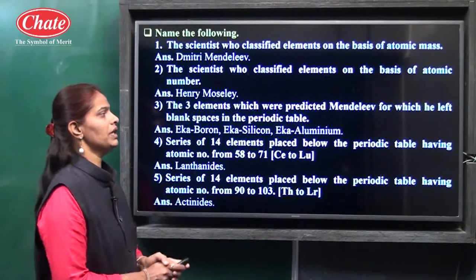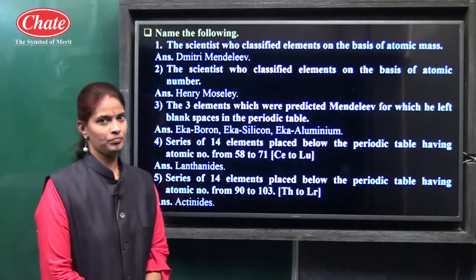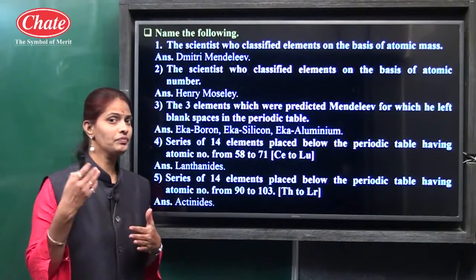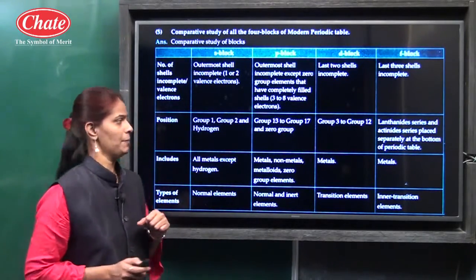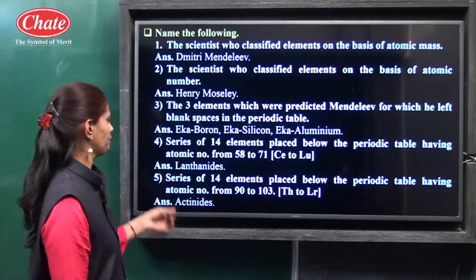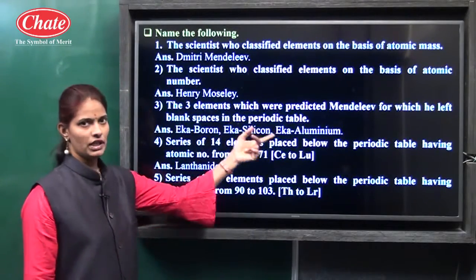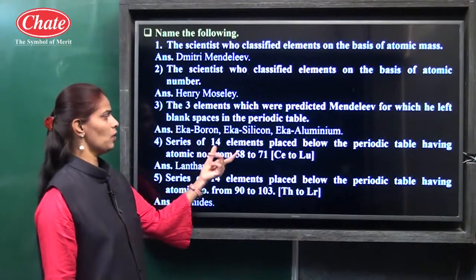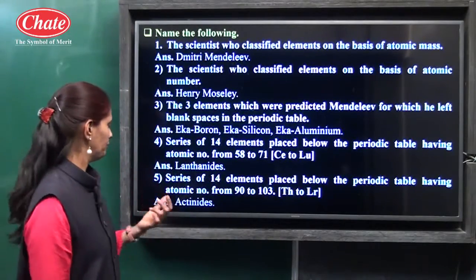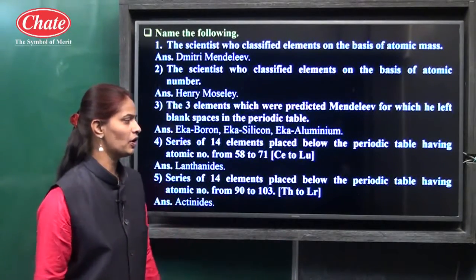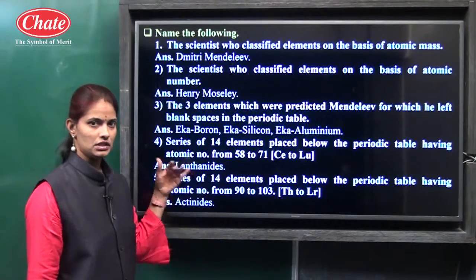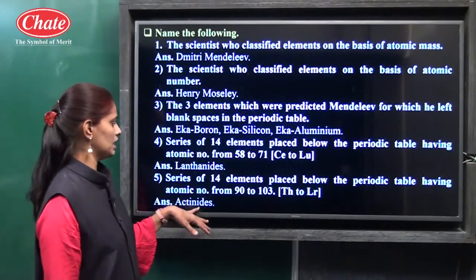The family of non-metals having valency 1: halogens. The family of metals having valency 2: alkaline earth metals — group 2. Elements having valency 4: carbon, silicon. Non-metals in the third period: phosphorus, sulfur, chlorine, and argon. The scientist who classified elements on the basis of atomic number: Henry Moseley. The three elements predicted by Mendeleev for which he left blank spaces: Eka-boron, Eka-silicon, and Eka-aluminium. The series of 14 elements placed below the periodic table having atomic numbers from 58 to 71: lanthanide series. From 90 to 103: actinide series.